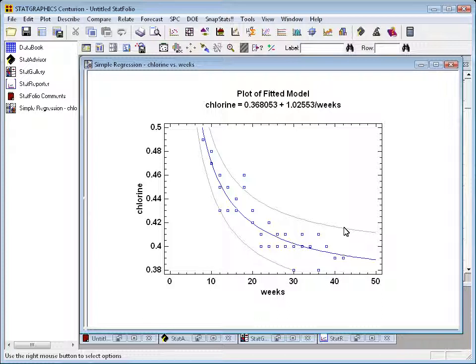By the way, the data we're looking at is data from a shelf life study. In this dataset, samples were taken of a product anywhere from about 8 weeks after it was produced out to about 42 weeks. The amount of available chlorine in each of those samples was measured and now we've gone ahead and fit a curve to it.